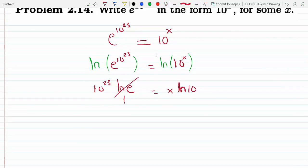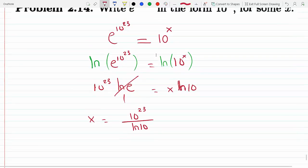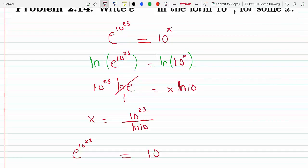That means x will just equal 10^23 divided by ln(10). Now we just plug it back into the expression. I conclude that e^(10^23) has to equal 10 raised to the 10^23 divided by ln(10). You can figure this out on the calculator; that's relatively simple.